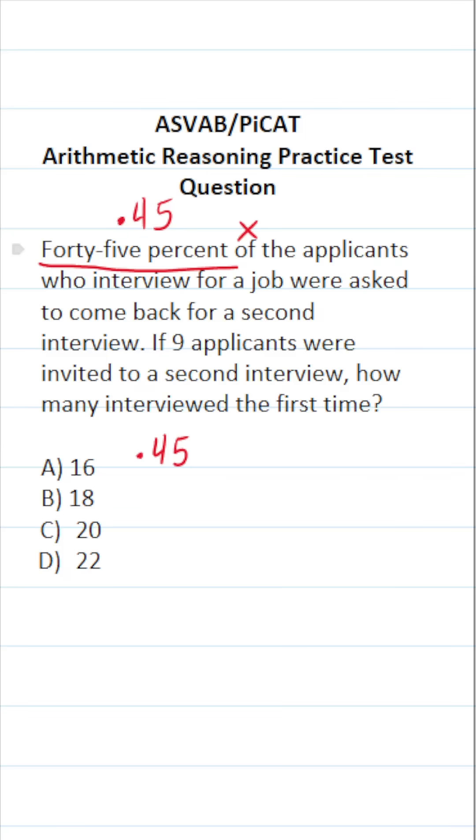Of in math is typically multiplication. So this becomes 0.45 times the applicants who interviewed for a job. The total number of applicants who interviewed for the job is unknown. In math, we represent unknowns with letter variables. I'm going to call the total number of applicants who interviewed for the job X.